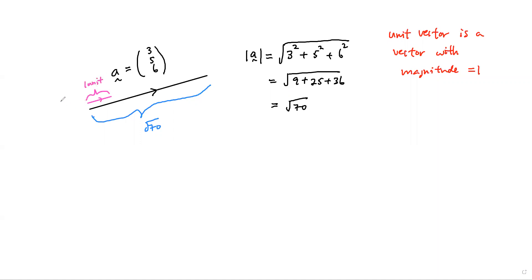And we can actually write the unit vector of a with a little hat on top of the a - this represents unit vector of a. So now how do we calculate the unit vector of a? First we need the magnitude of a itself. This is the formula: I can take 1 divided by the magnitude of a times a itself, which is 3, 5, and 6.